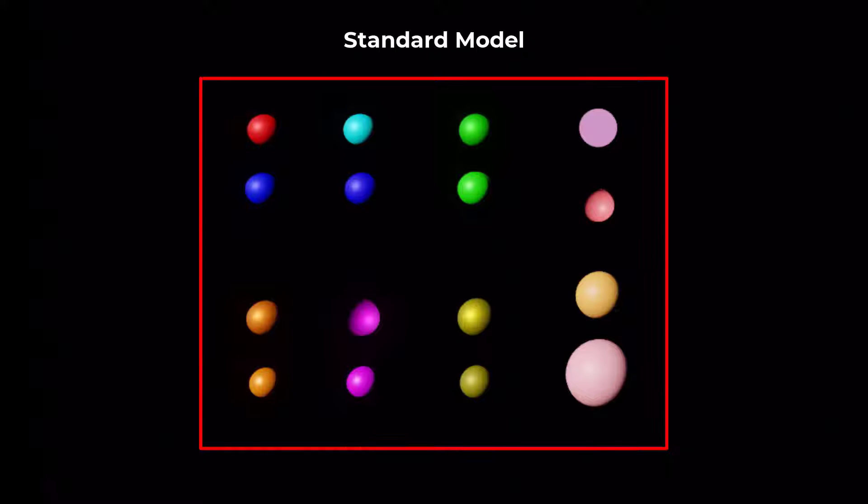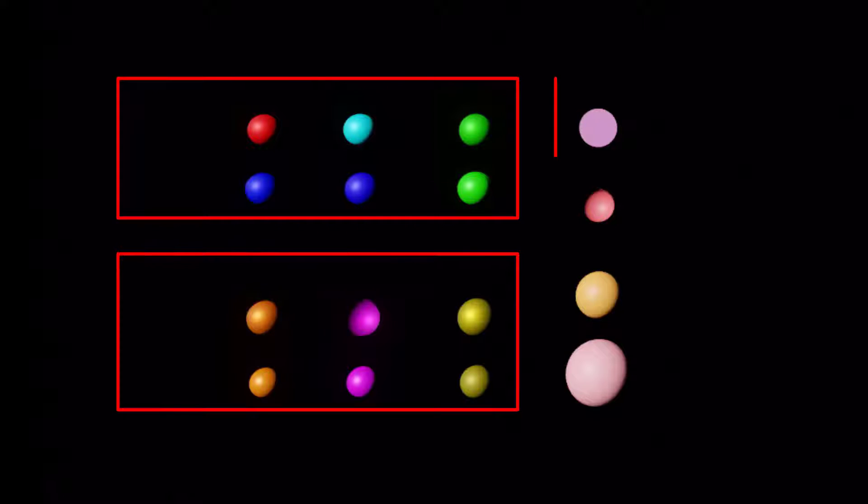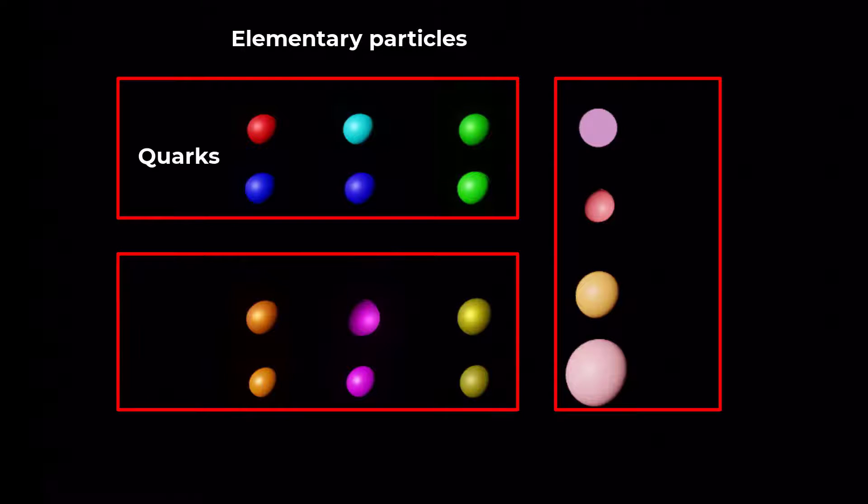According to the standard model of particle physics, there are three types of elementary particles: quarks, leptons, and bosons.